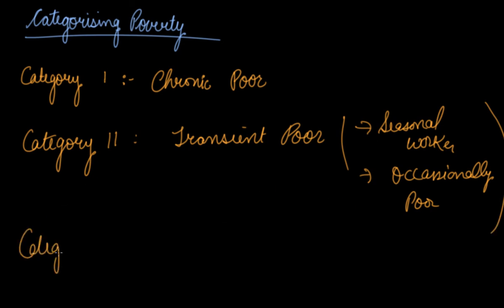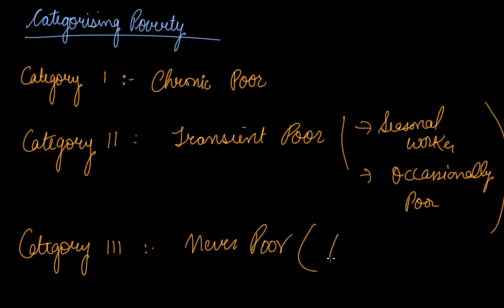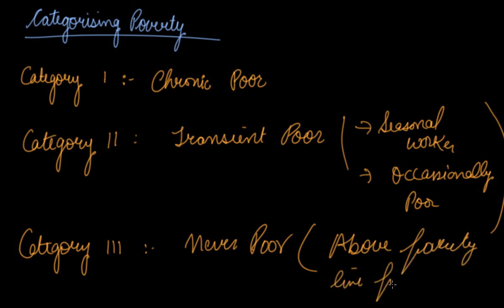Category 3 is the never poor — which means above poverty line people, or above poverty line population. In this way we have categorized poverty.